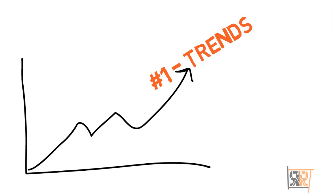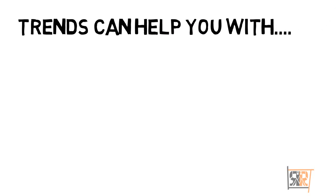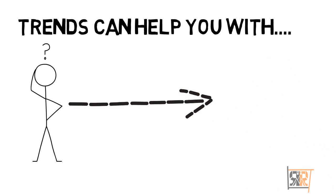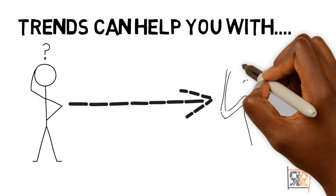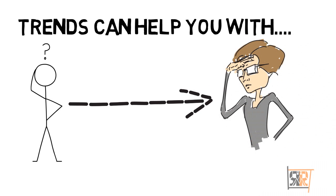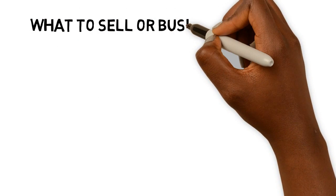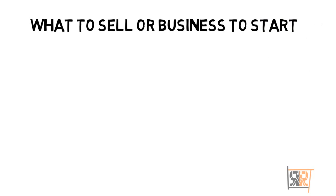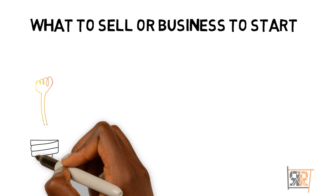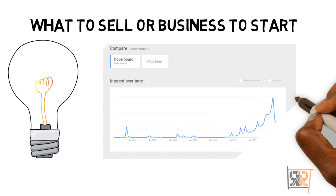Let's start with the basic thing Google really does — analyzing trends. When it comes to trends, you might have a couple of questions, like what is this going to do for me? Well, Google Trends is going to help you figure out things like what to sell or what kind of business to start based on your passion.